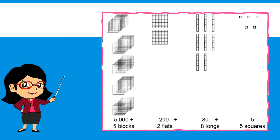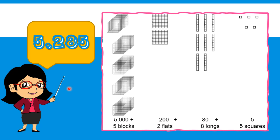Let us try another example. We have 1, 2, 3, 4, 5 — 5 blocks which is 5,000. We have another 2 flats which is equal to 200. We have 8 longs — 1, 2, 3, 4, 5, 6, 7, 8 — which is equal to 80. And we have 5 squares — 1, 2, 3, 4, 5 — which is equal to 5. So if we put together all these values, we will have 5,285.